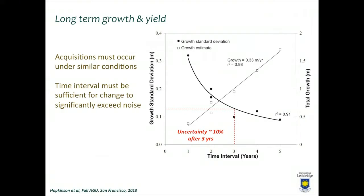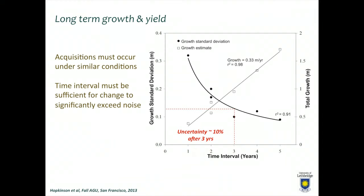As total growth increases, the difference you're measuring increases and the uncertainty actually drops. By the time you hit three years in this particular example, we're down to a 10% uncertainty. So from a monitoring point of view, in this particular context, you'd probably want to wait about three years before you have high confidence that the change you're observing reflects reality.